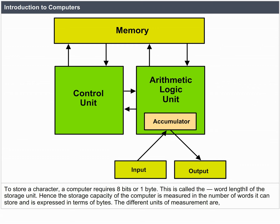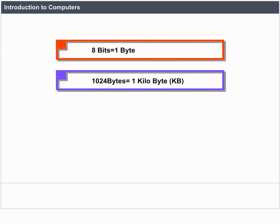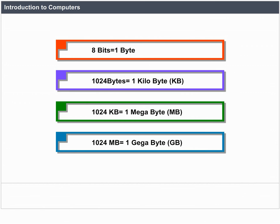The storage capacity of the computer is measured in the number of words it can store and is expressed in terms of bytes. The different units of measurement are: 8 bits equals 1 byte; 1024 bytes equals 1 kilobyte (KB); 1024 KB equals 1 megabyte (MB); 1024 MB equals 1 gigabyte (GB).